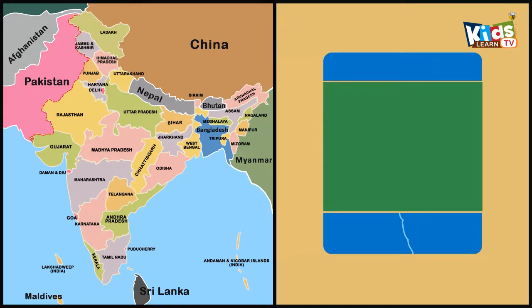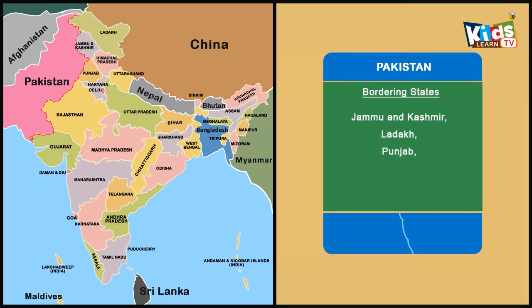The Indian states Jammu and Kashmir, Ladakh, Punjab, Rajasthan and Gujarat share the border with Pakistan. The border length is 3323 km.